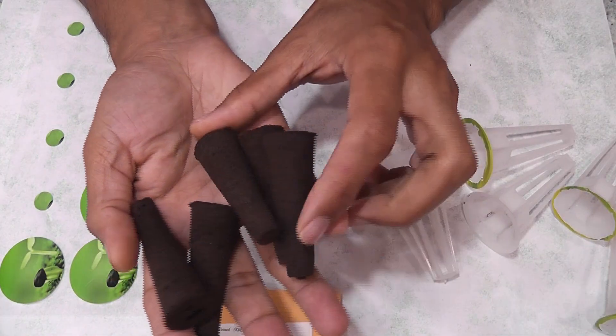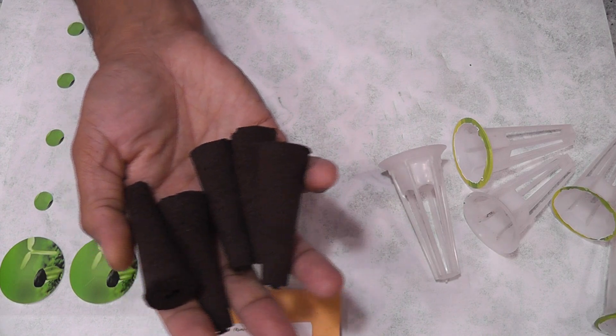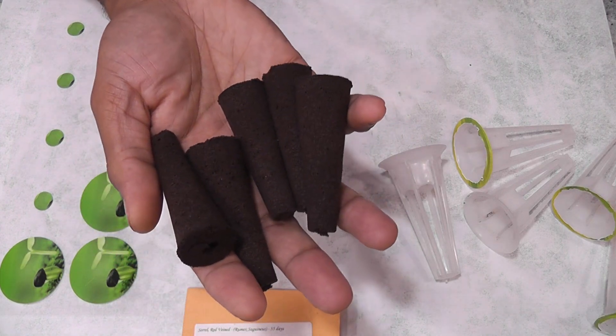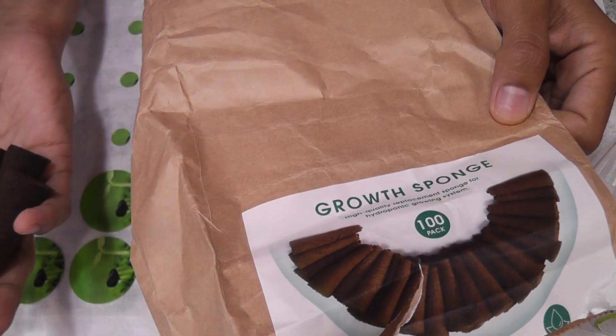Next thing is the sponges. I used to buy sponges from AeroGarden in the past, but I see a lot of off-brand options on Amazon. I tried many of them and finally settled with these off-brand sponges.